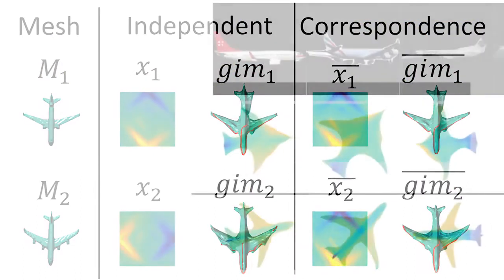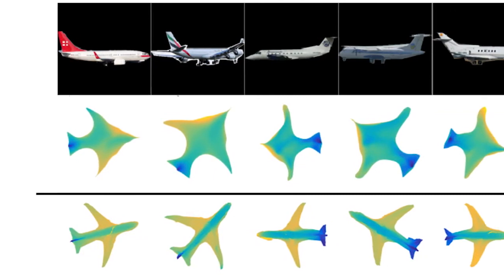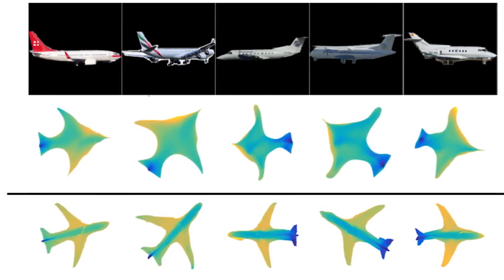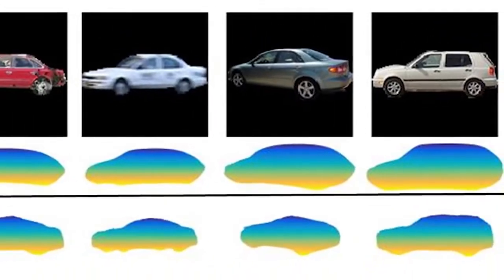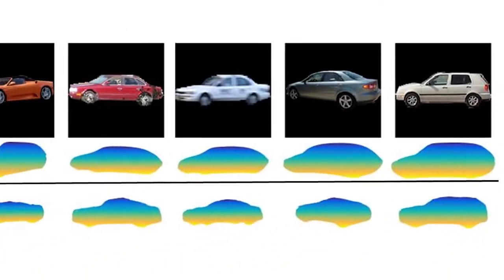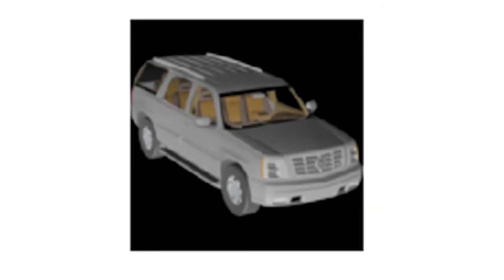We just keep showing it a lot of different shapes. Basically it learns patterns like doors, wheels, handles. Now the question is: when the machine is shown a new image of a 2D object, can it predict the 3D?